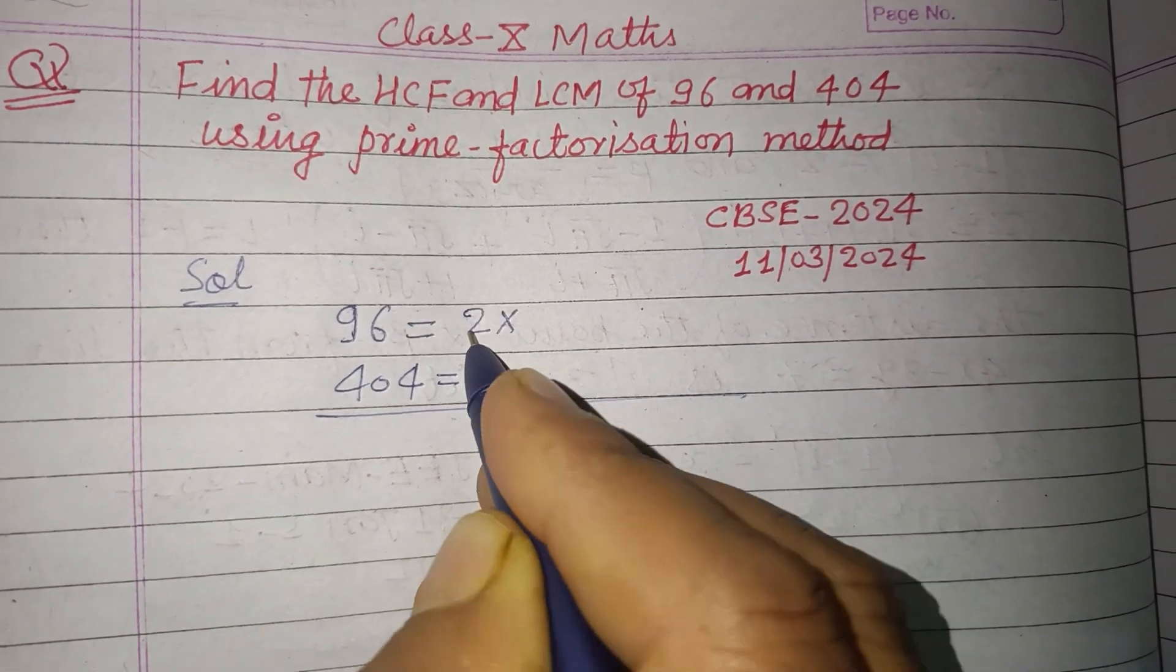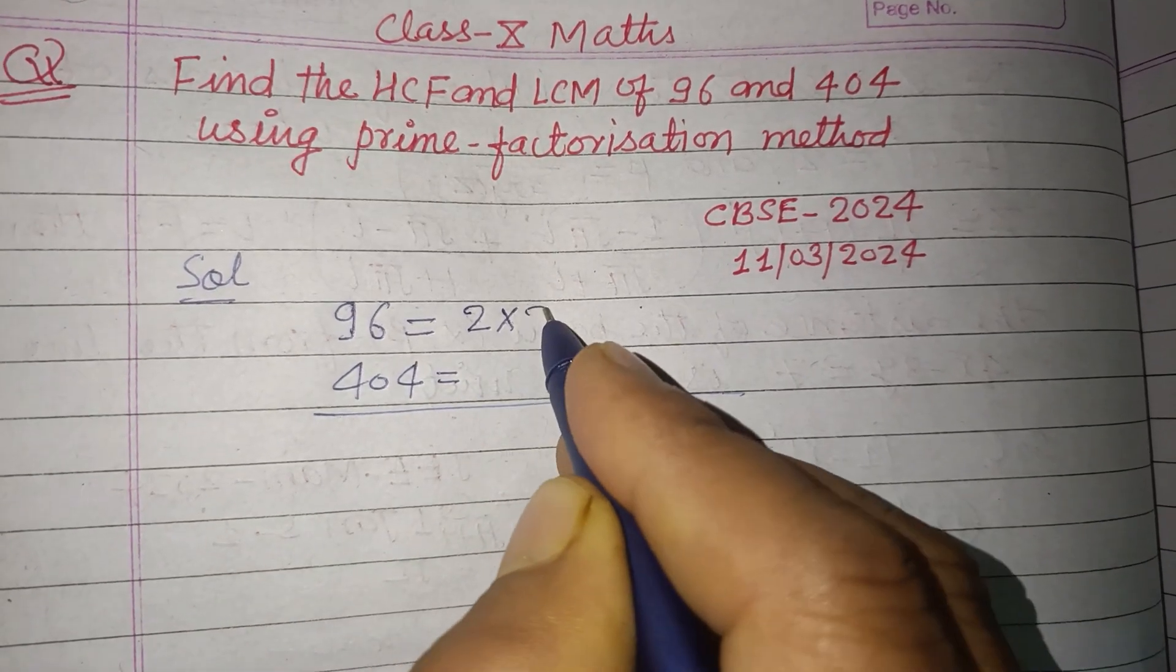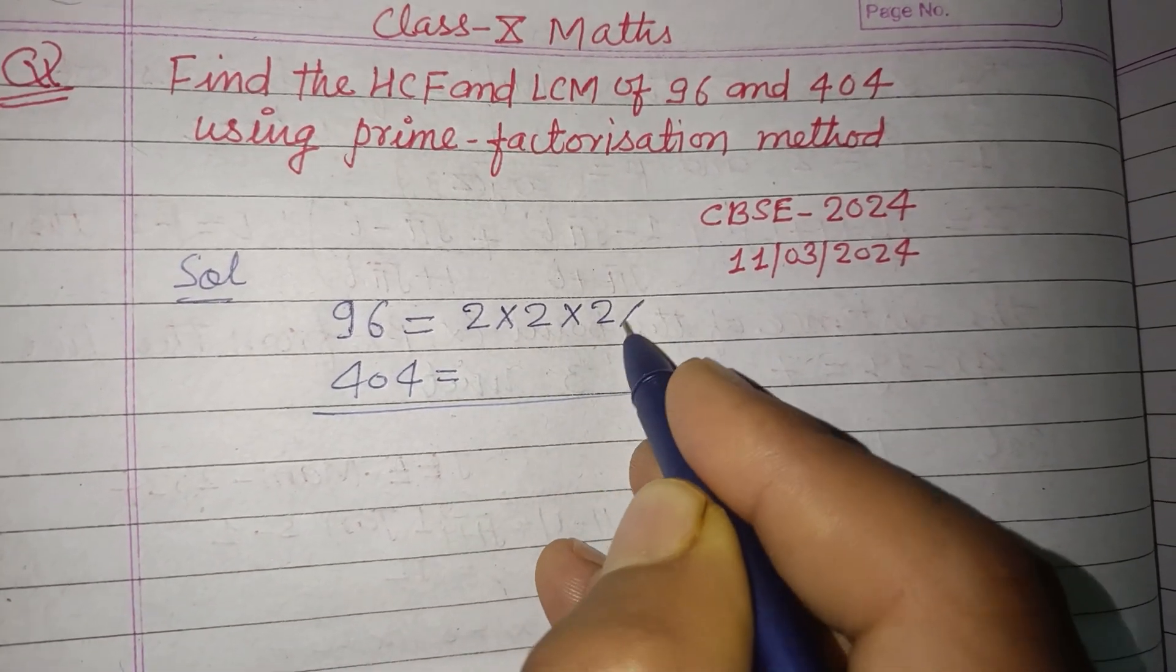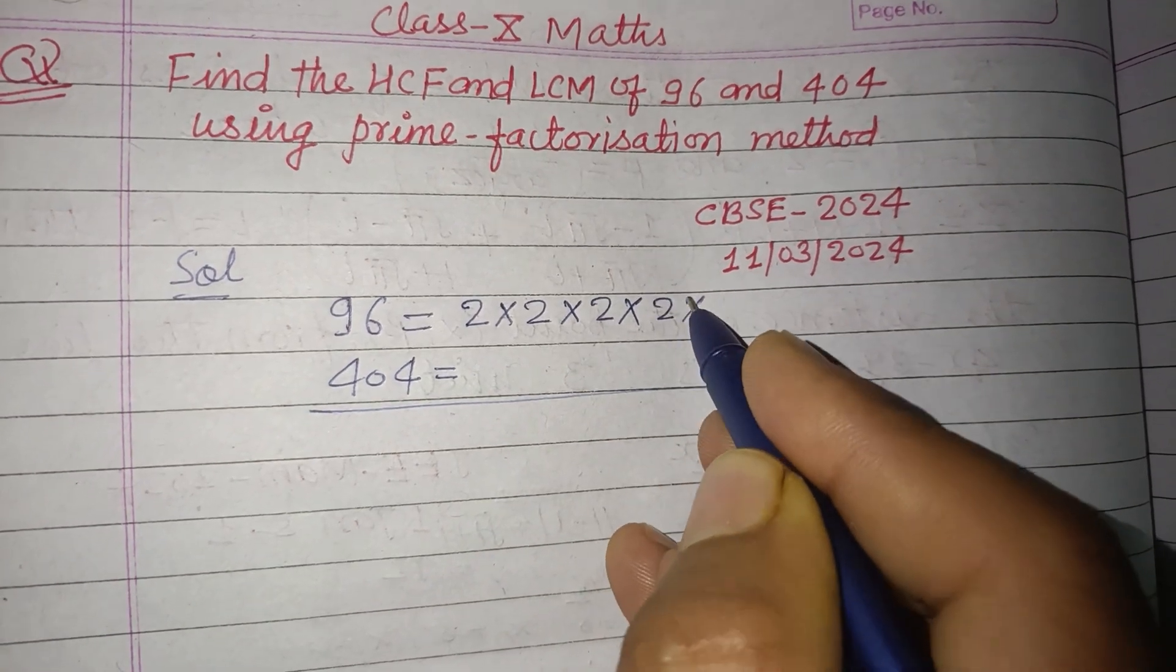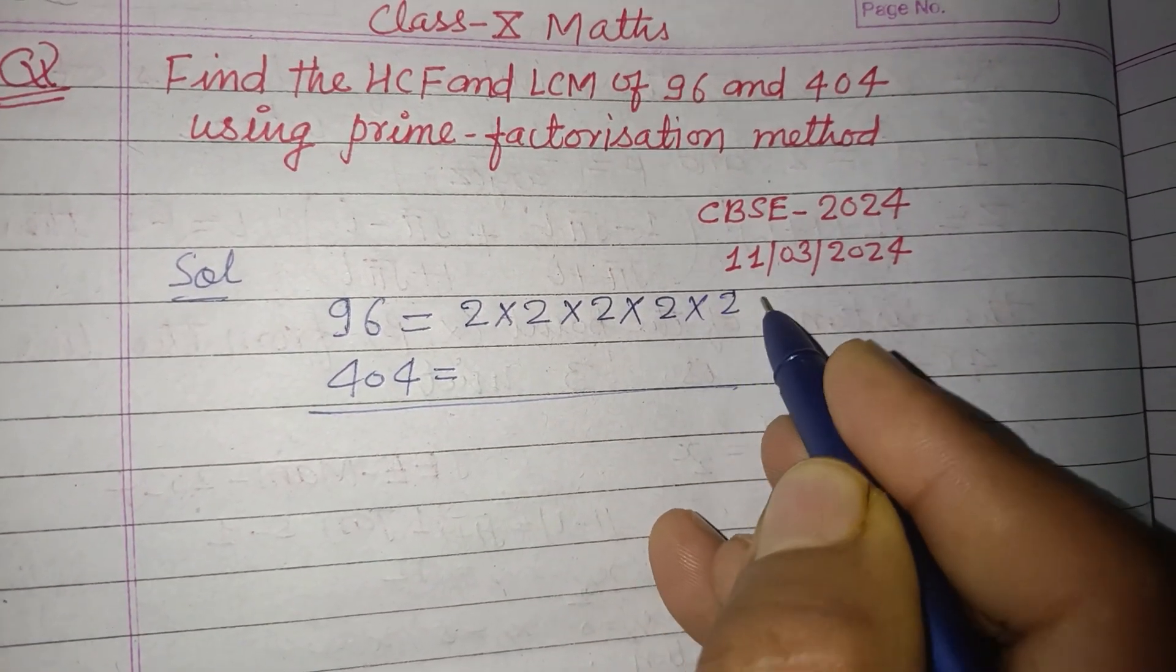When we divide 96 by 2, we got 48. Again by 2, we got 24. Again by 2, we got 12. Again by 2, we got 6. Again by 2, we got 3.